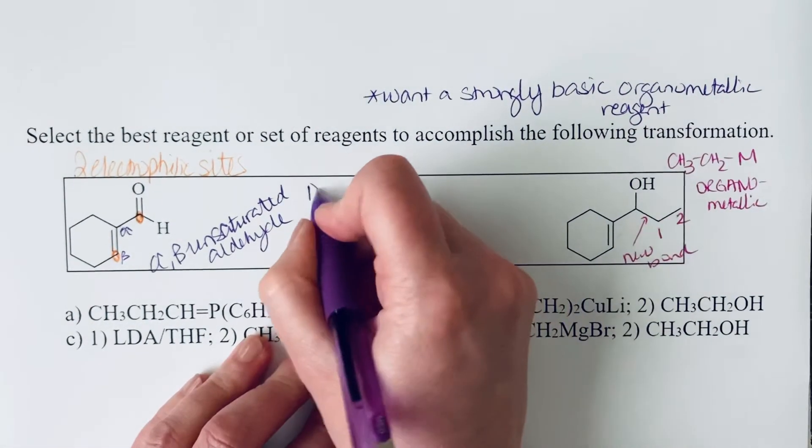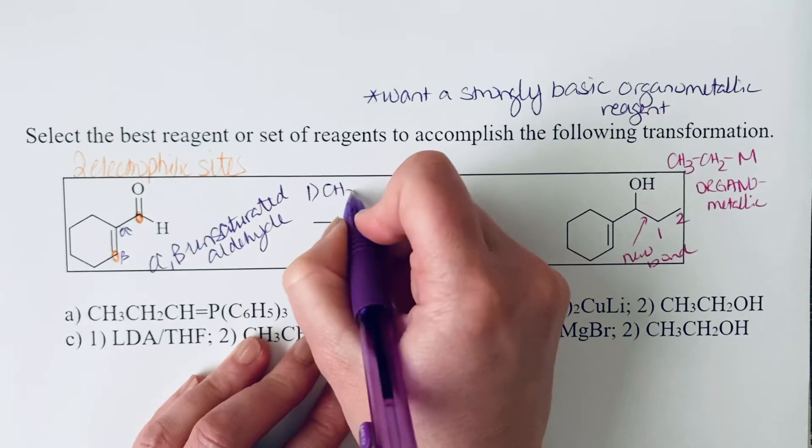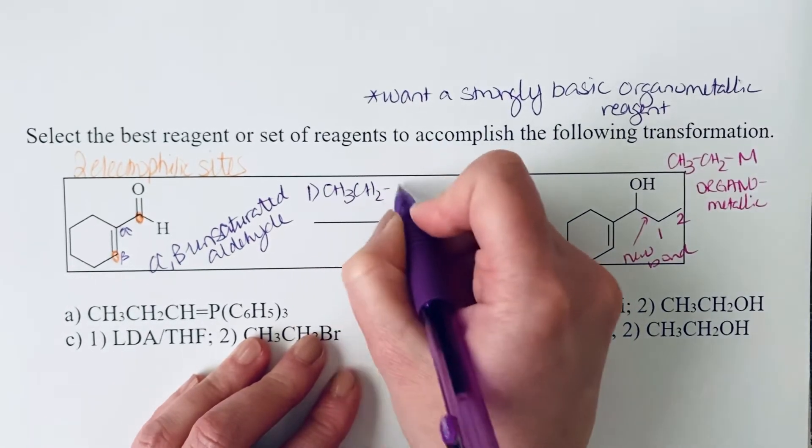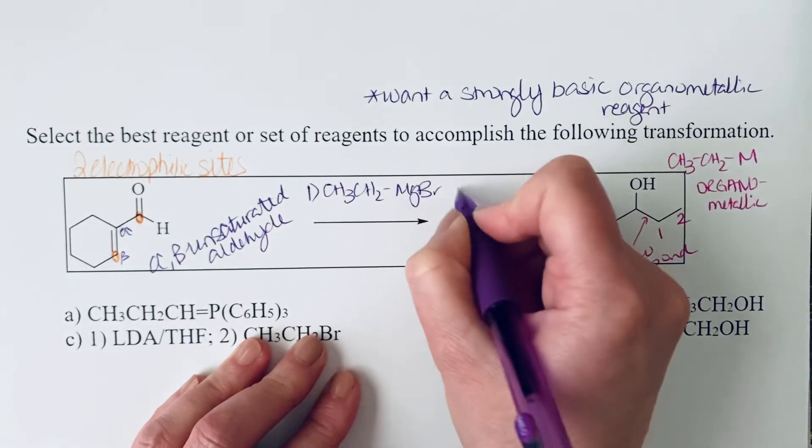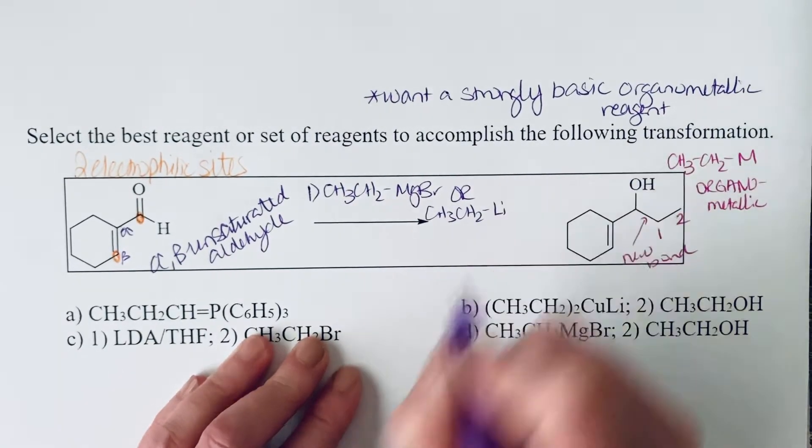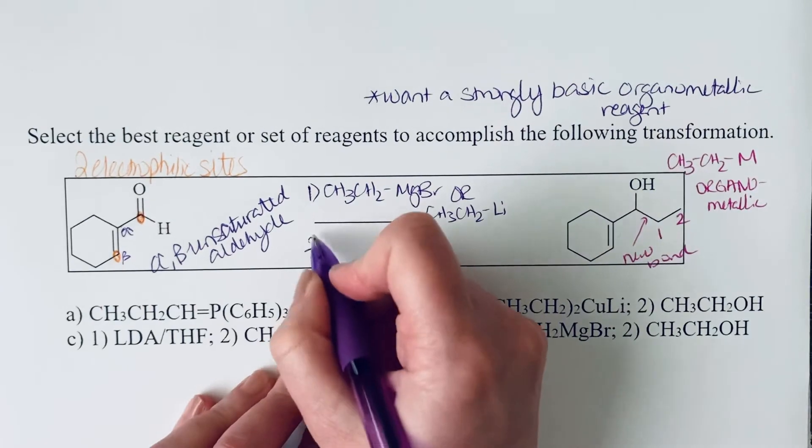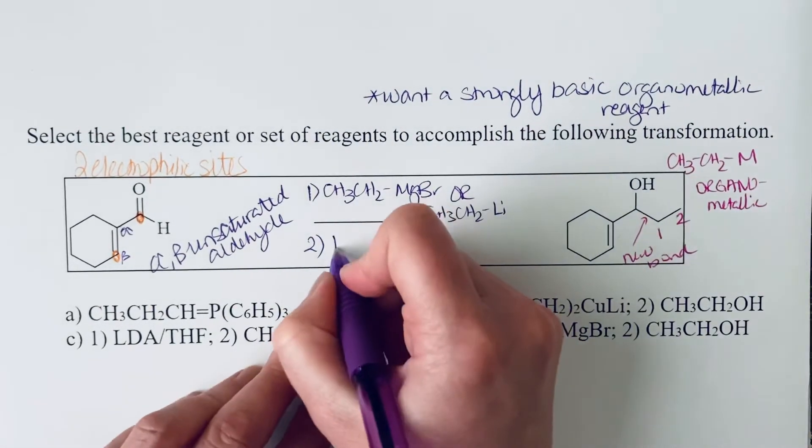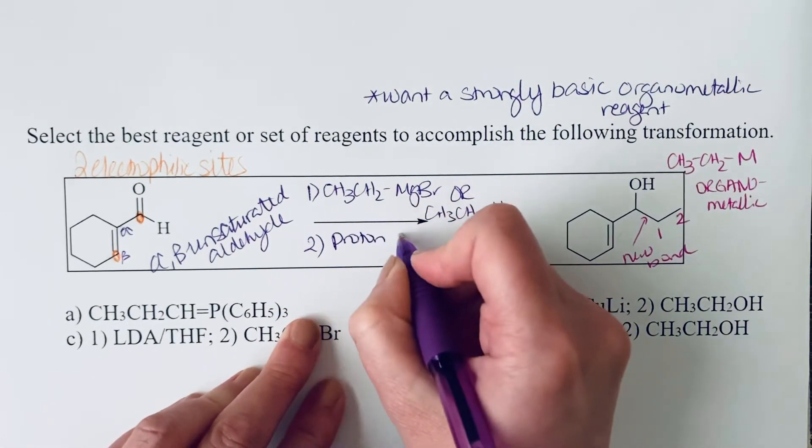So that means for our first step, we're going to need something like either a Grignard or you could also use an alkyl lithium, although it's more common that you would see a Grignard. And then as a second step, you would need some sort of proton source.